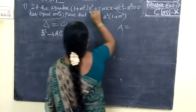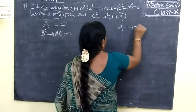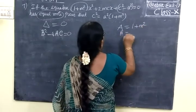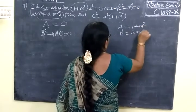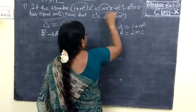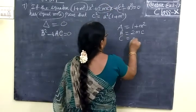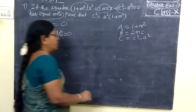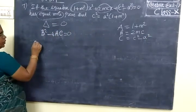So A equal to 1 plus M², then B equal to 2MC. This is B. Then C equal to C² minus A². Now we substitute here.